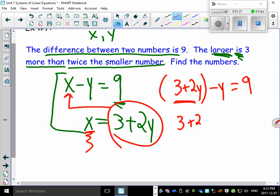Three plus two y minus y equals to nine. Combine like terms. You got three plus y equals to nine. Subtract the three. Subtract the three. Y looks like it's actually equal to six.